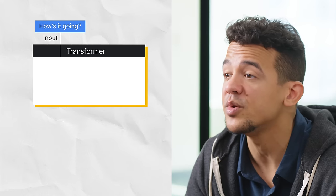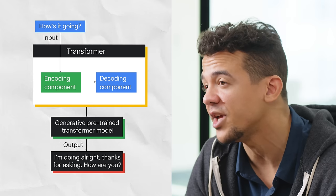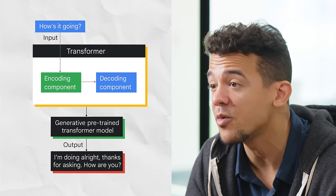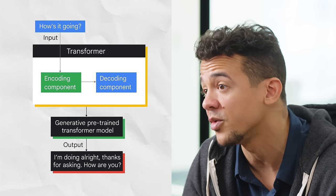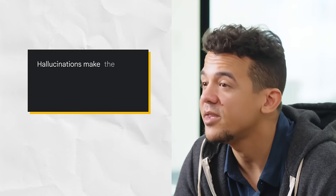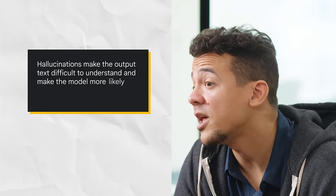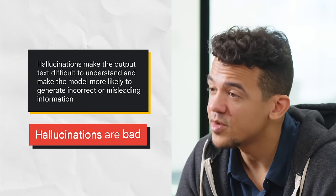The power of generative AI comes from the use of transformers. Transformers produced the 2018 revolution in natural language processing. At a high level, a transformer model consists of an encoder and a decoder. The encoder encodes the input sequence and passes it to the decoder, which learns how to decode the representations for a relevant task. Sometimes transformers run into issues, though. Hallucinations are words or phrases that are generated by the model that are often nonsensical or grammatically incorrect. Hallucinations can be caused by a number of factors: when the model is not trained on enough data, is trained on noisy or dirty data, is not given enough context, or is not given enough constraints. Hallucinations can make the output text difficult to understand, and can make the model more likely to generate incorrect or misleading information. So put simply, hallucinations are bad.